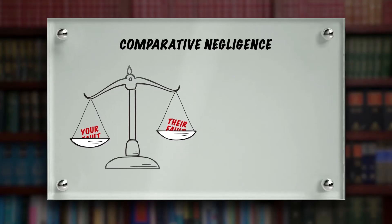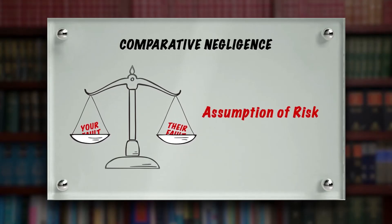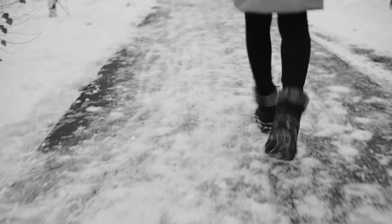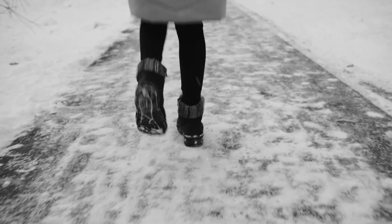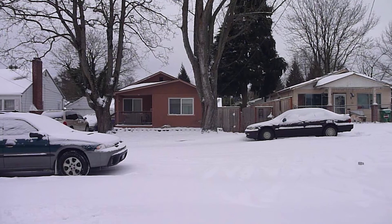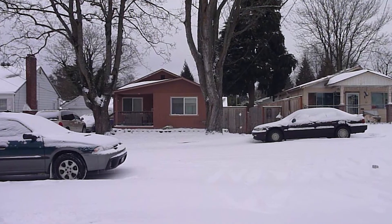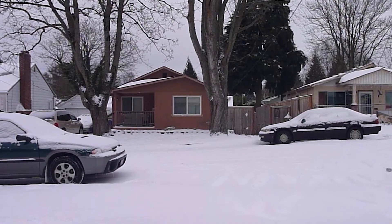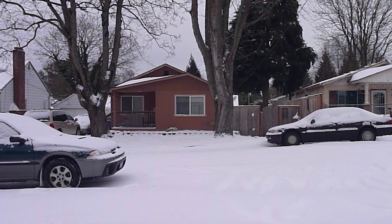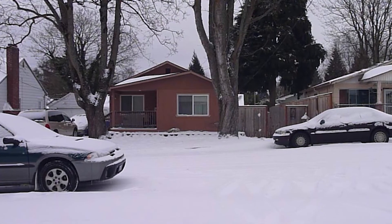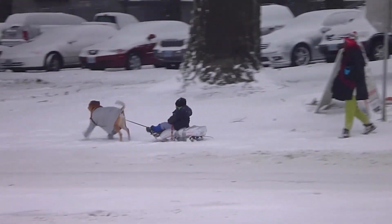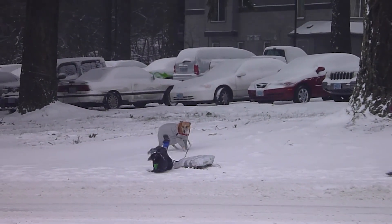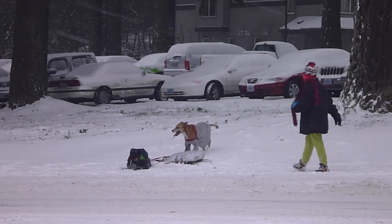One of the components of comparative negligence is something called assumption of the risk. What if you know the risk? You're walking down a sidewalk and you see the sidewalk in front of you has not been cleaned off from snow or ice. Despite the fact that the person who owned the home, or the apartment complex, may have a responsibility to keep that area free of snow and ice — if you assume the risk of walking across that snow and ice and you get hurt, that may be used against you under the comparative negligence doctrine.